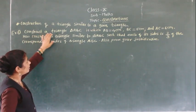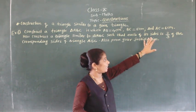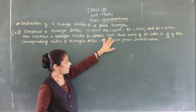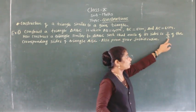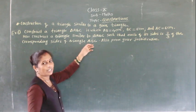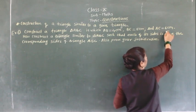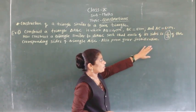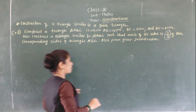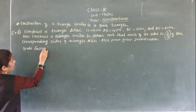In the first example, construct a triangle ABC in which AB equals 4 cm, BC equals 5 cm, and AC equals 6 cm. Now construct a triangle similar to triangle ABC such that each of its sides is 2/3 of the corresponding sides of triangle ABC, also write the justification. So here 2/3 is called the scale factor.